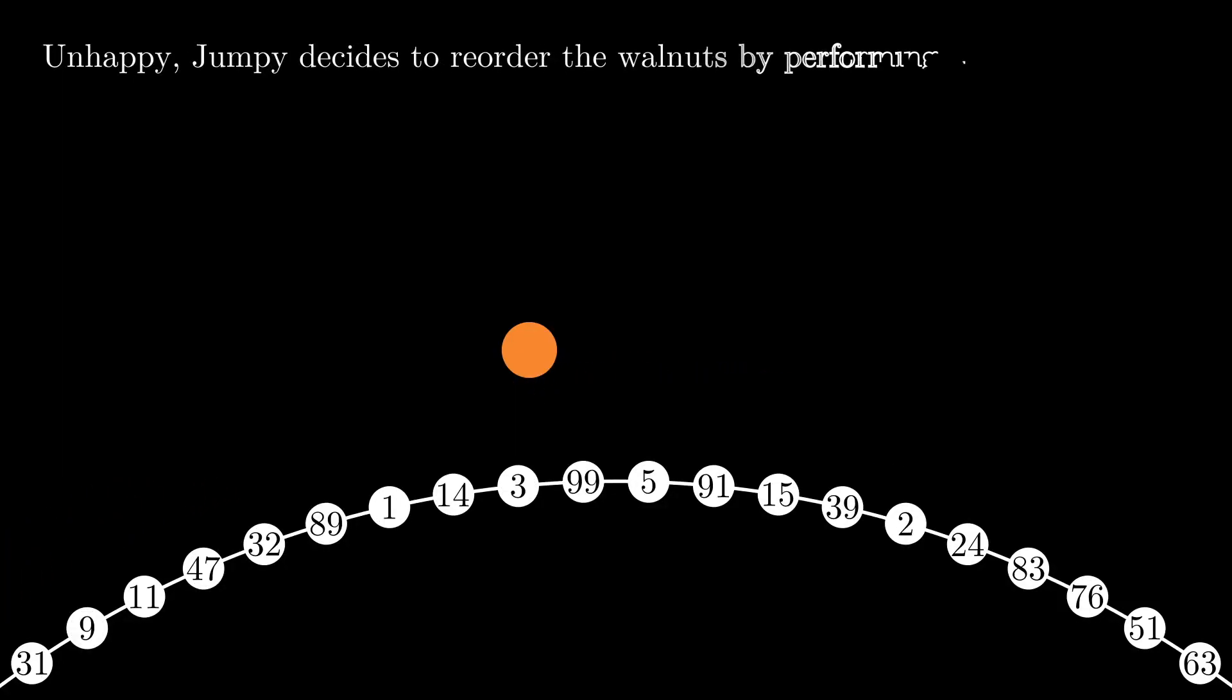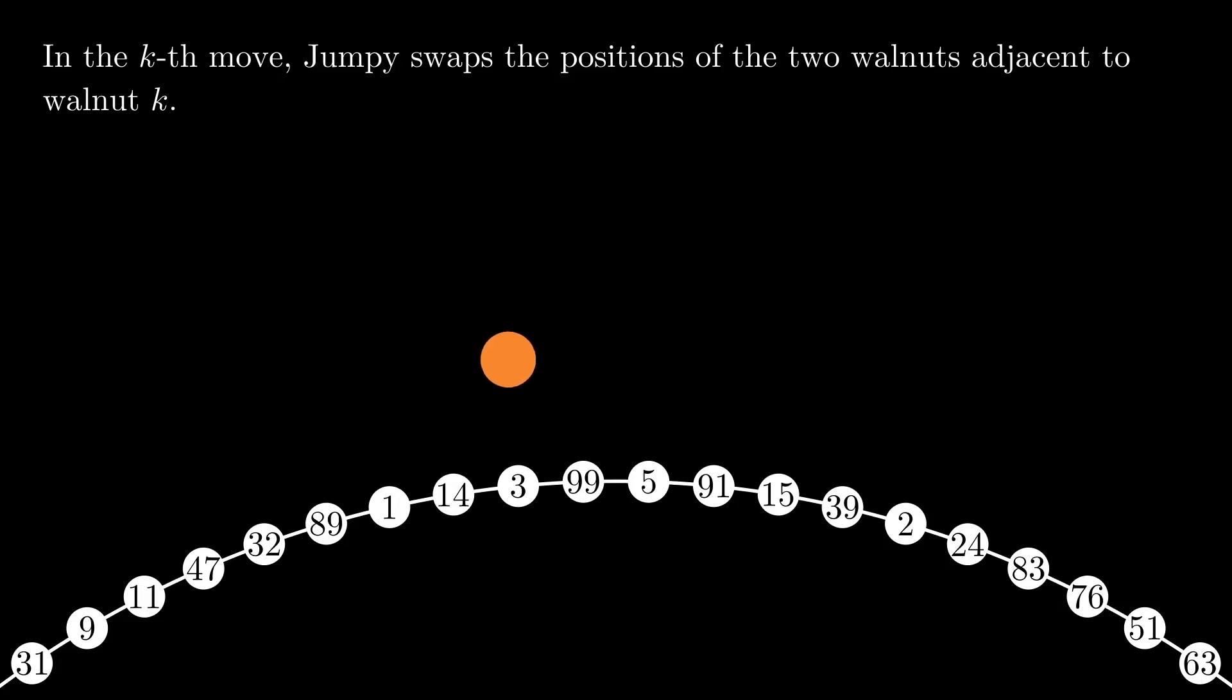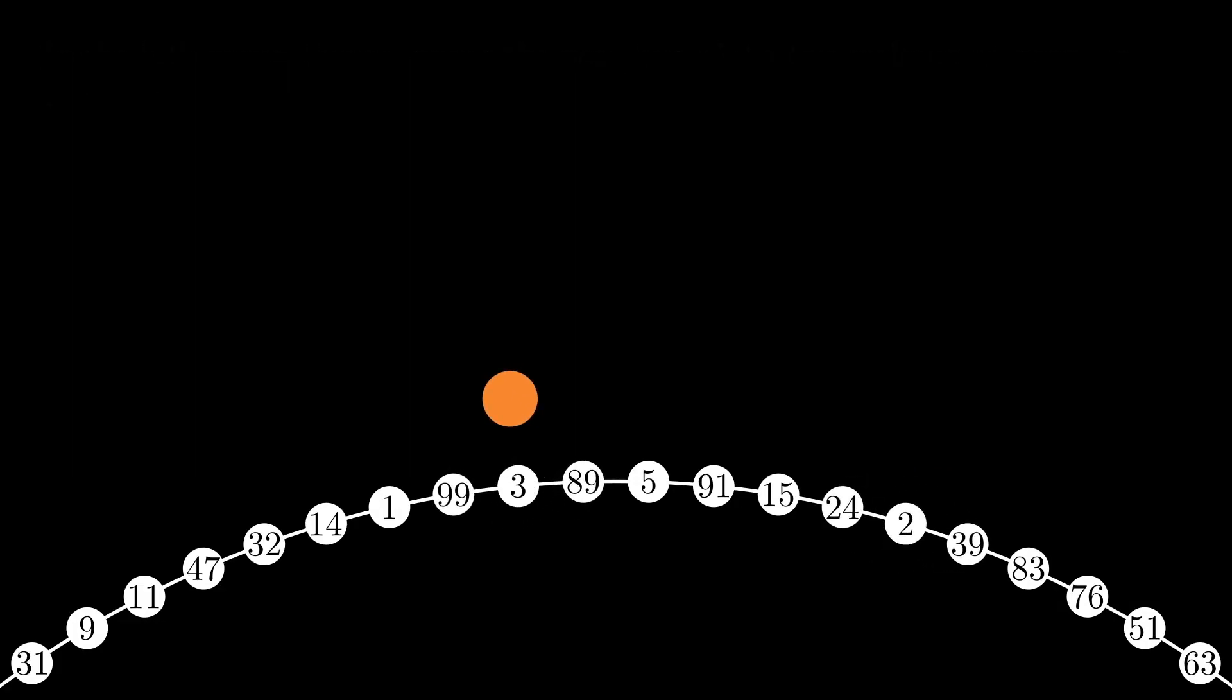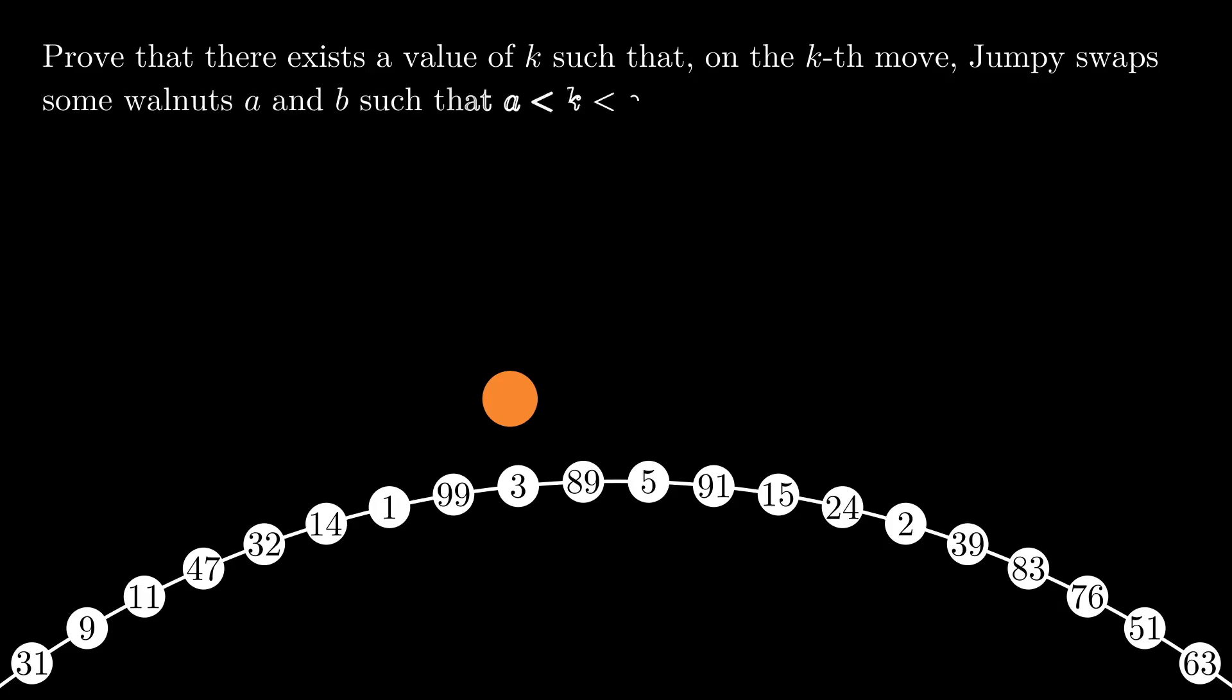Unhappy, Jumpy decides to reorder the walnuts by performing a sequence of 2021 moves. In the kth move, Jumpy swaps the position of the two walnuts adjacent to walnut k. Prove that there exists a value of k such that on the kth move, Jumpy swaps some walnuts a and b such that a is less than k is less than b.